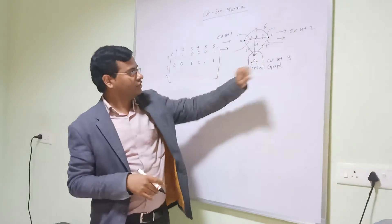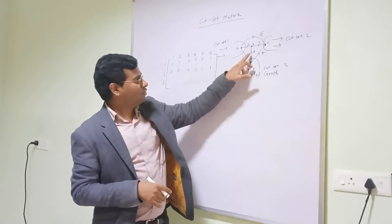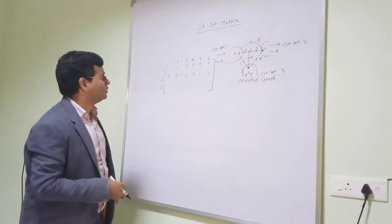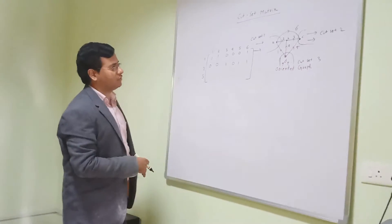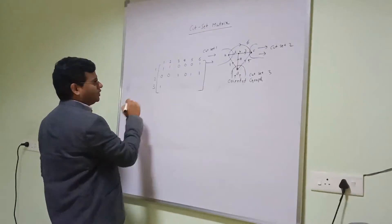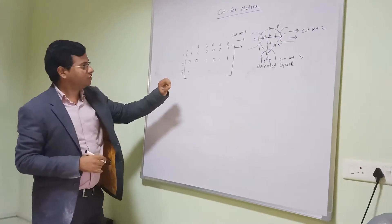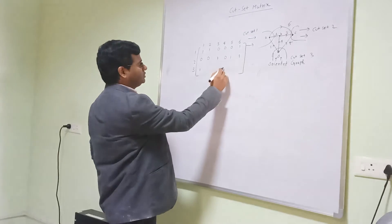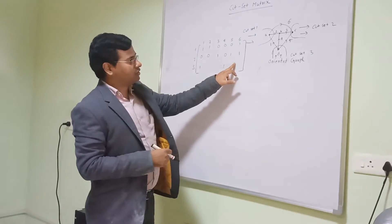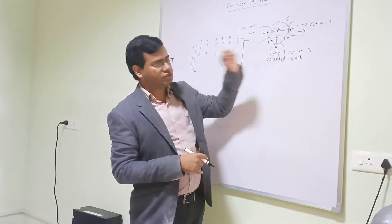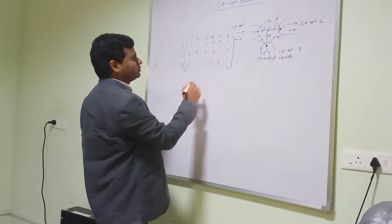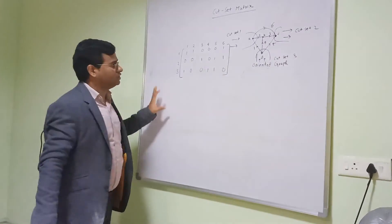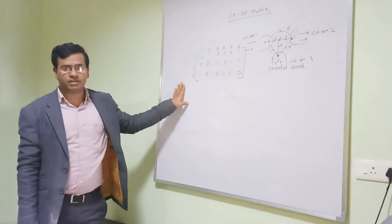Then we go to cut set 3. In cut set 3 there are only 3 branches: 1, 4, and 5. We see the direction. Branch 1 is in the same direction, that means plus 1. Branch 4 is also in the same direction, so this is also plus 1. Branch 5 is also plus 1. All other branches are 0. In this way we find the cut-set matrix.